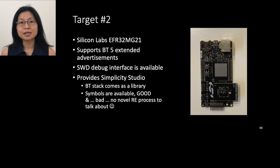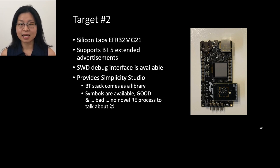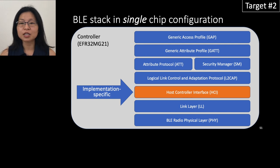Now let's look at the next target: the Silicon Labs EFR32MG21 chip. I picked this chip because it supports Bluetooth 5 extended advertisement. This development board also supports hardware debugging, and Silicon Labs provides an SDK that comes with a Bluetooth stack in library format — and luckily this library has some symbols. This Silicon Labs chip is a single chip configuration, so all protocols reside on the controller device. In the demo you won't see any HCI interaction between host and controller.